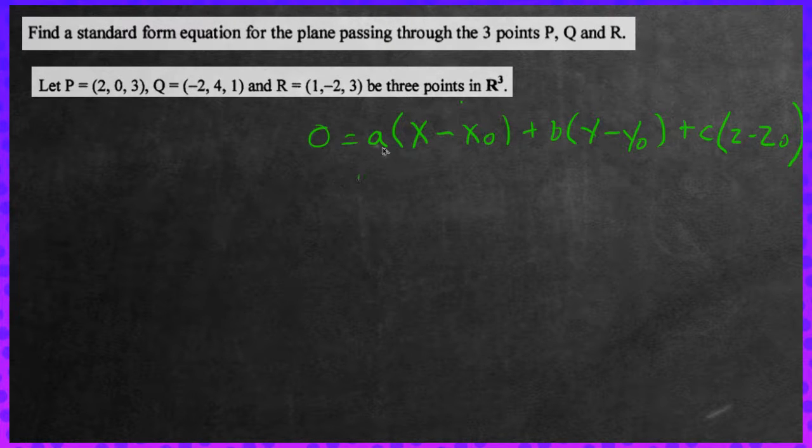So in this particular plane equation, the A, the B, and the C, all those three things there being multiplied, those are the components for a vector. So a vector A, B, C that is normal, or orthogonal, or at a right angle.